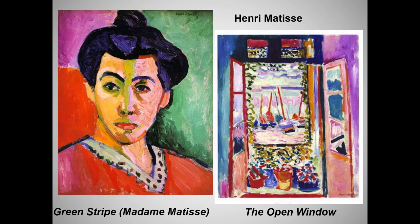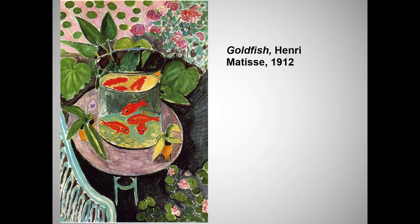Here are two more characteristic Matisse paintings, in case you get an attribution question. Note the expressive use of bold color and what his critics called an unfinished look. Line has likewise returned in the form of boldly outlined figures. And now that I've introduced Matisse — way too quickly — let's hear from a student presenter.